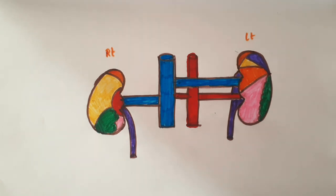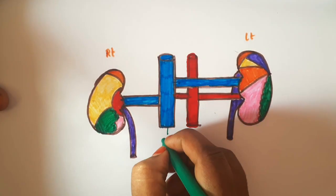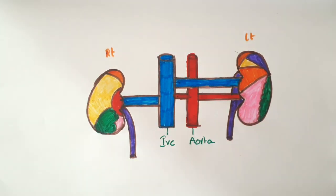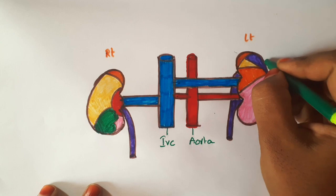These upper poles are comparatively near to the medial plane, and lower poles are directed downwards and laterally. This upper pole will give attachment to the suprarenal gland. And these are IVC and aorta.